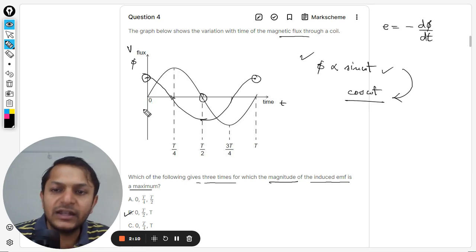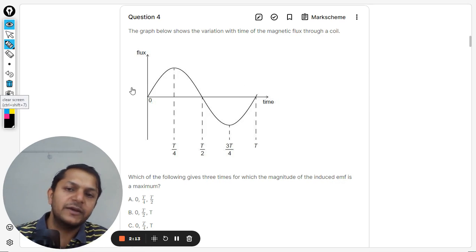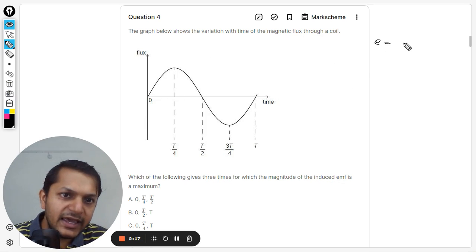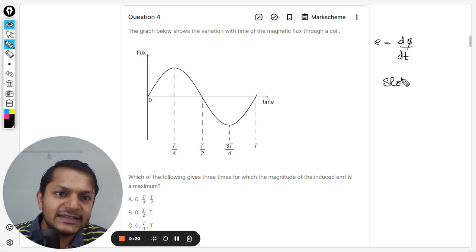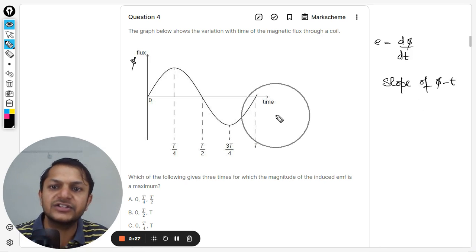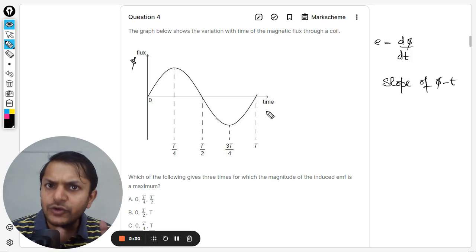So this is one thing. Now there is another thing, another way of thinking it. The other way is that clearly e is d phi by dt, so you can say that yes, this pertains to the slope of phi-t curve. This is the phi-t curve, the flux-time curve, and we need to find this slope.